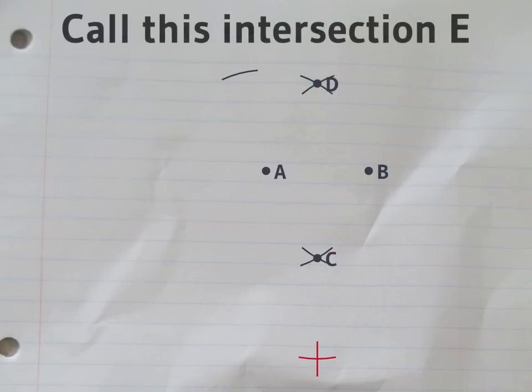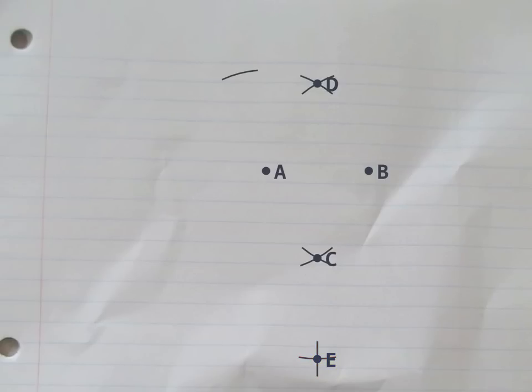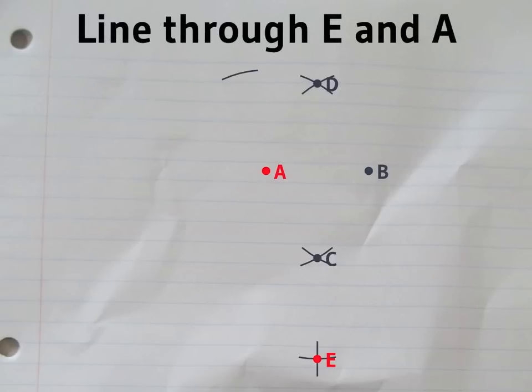That straight line cuts the circular arc down the bottom of the page. We'll call that E. Now, draw a straight line through E and A.